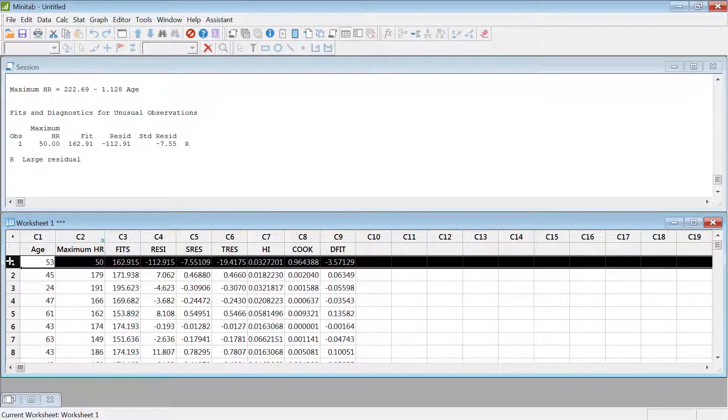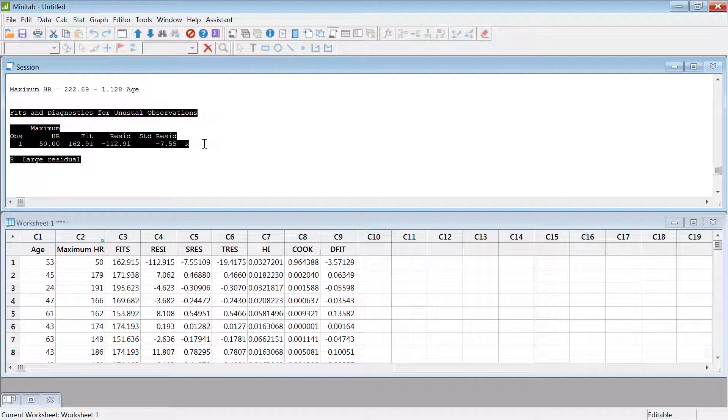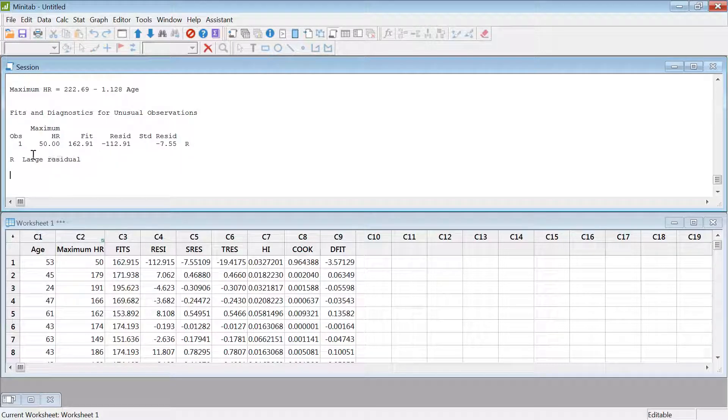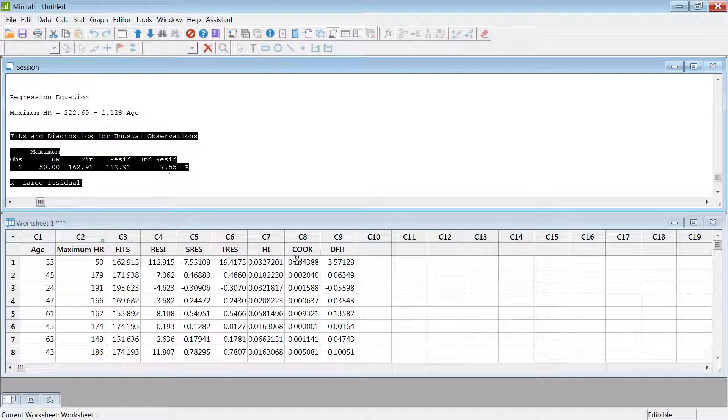However, this point is an outlier and also an influential point anyway. And also in Minitab, you will see Minitab will pick the outlier points for you. You don't have to do anything. As you can see here, observation one is picked as fits and diagnostics for unusual observation. So Minitab's default picks those values for you. Basically these things are mostly automated in most software these days.